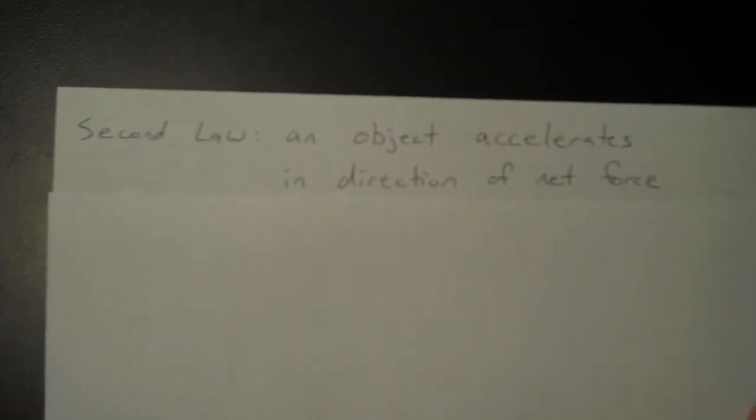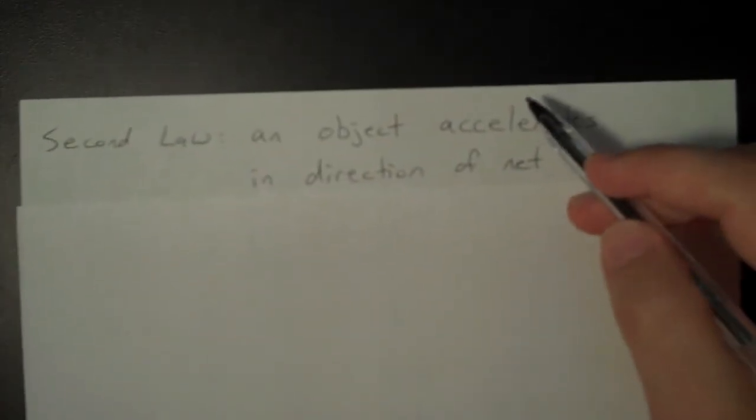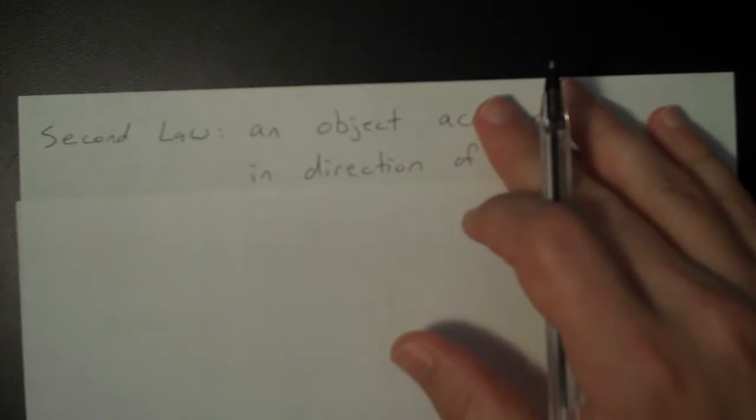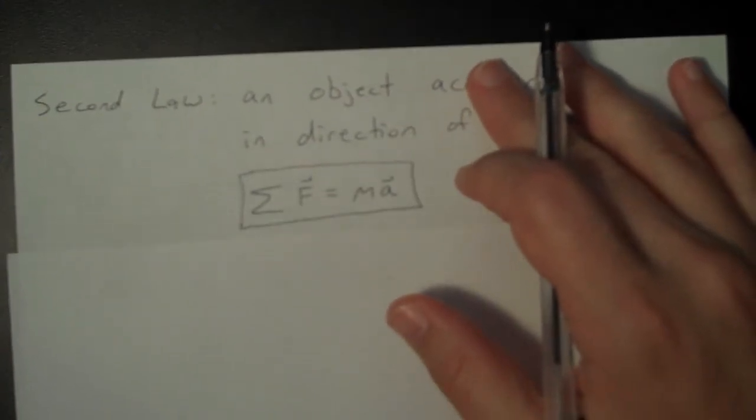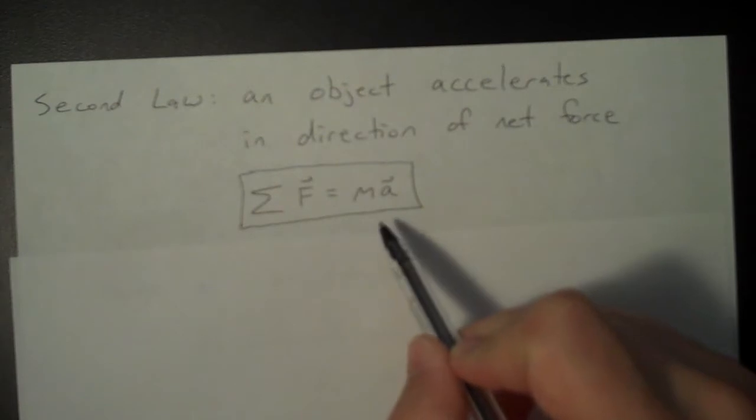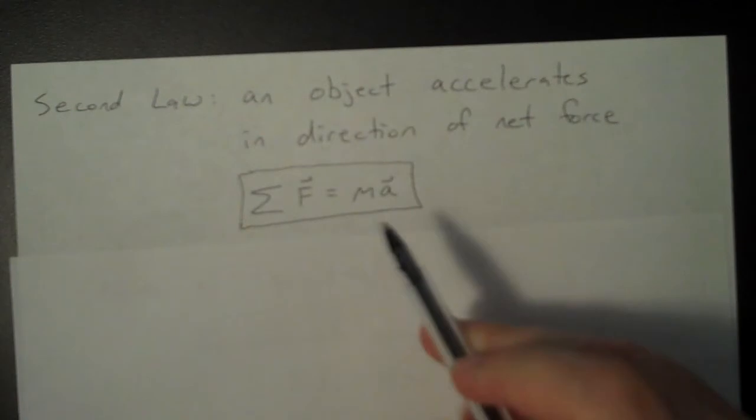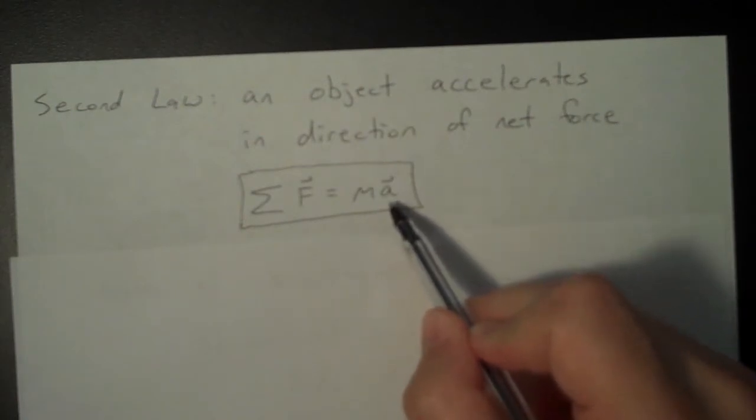Moving on to Newton's second law. Now, the second law is going to quantify what the relationship is between force and acceleration. So it says that an object is going to accelerate in the direction the net force is acting. And they are related to one another through this relationship. So this side of the equation is the net force, and this side is mass times the acceleration.